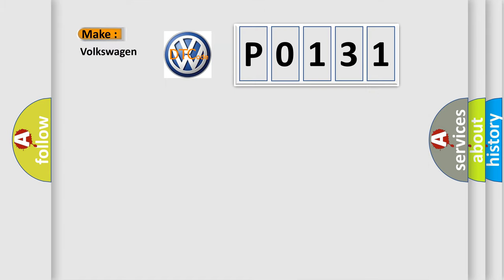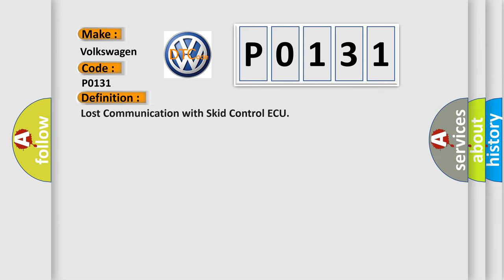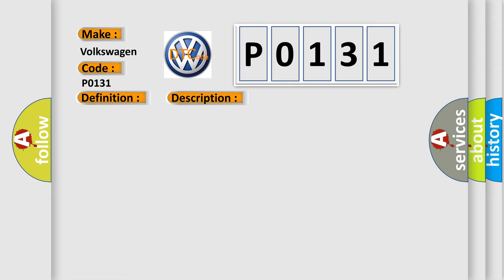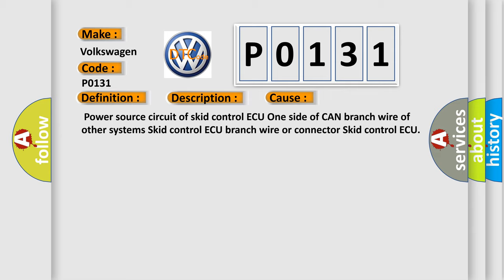So, what does the Diagnostic Trouble Code P0131 interpret specifically for Volkswagen car manufacturers? The basic definition is: Lost communication with skid control AQ. When either condition below is met — ABS or CTRAC is not displayed on the CAN bus check screen of the TechStream — it applies to skid control AQ communication stop mode in the DTC combination table. This diagnostic error occurs most often in these cases: power source circuit of skid control AQ, one side of CAN branch wire of other systems, skid control AQ branch wire or connector, or the skid control AQ unit itself.